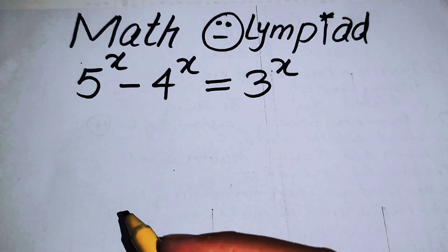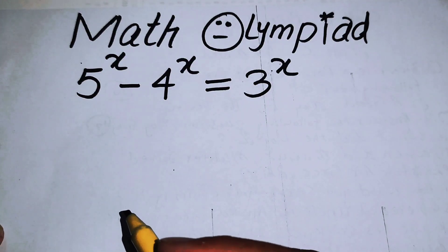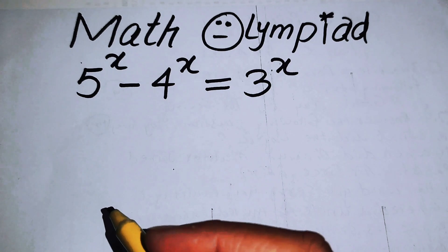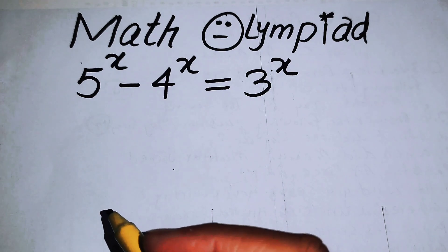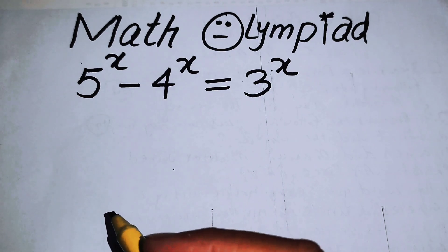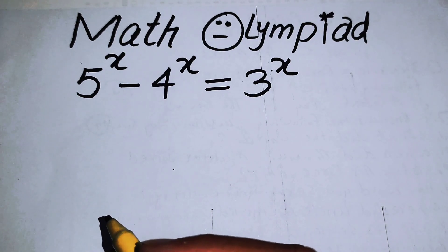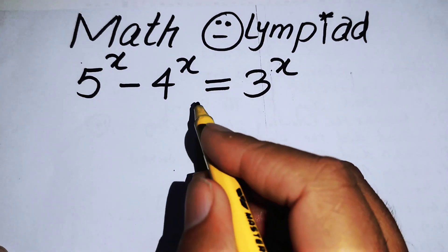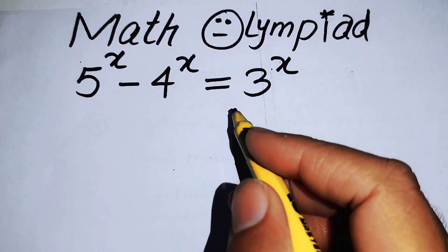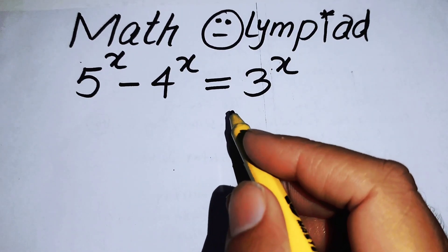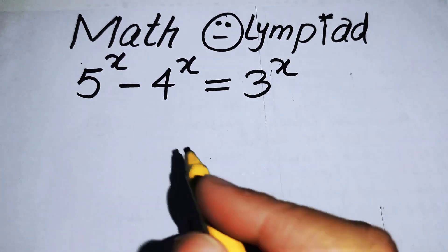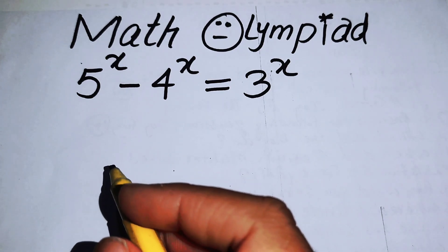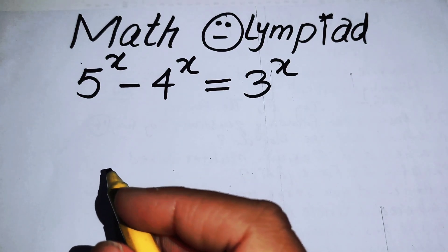Hello everyone, welcome back to the Map of Mathematics. In this video we are going to solve this nice algebra problem: 5 to the power of X minus 4 to the power of X equals 3 to the power of X. We will solve this problem for the values of X.